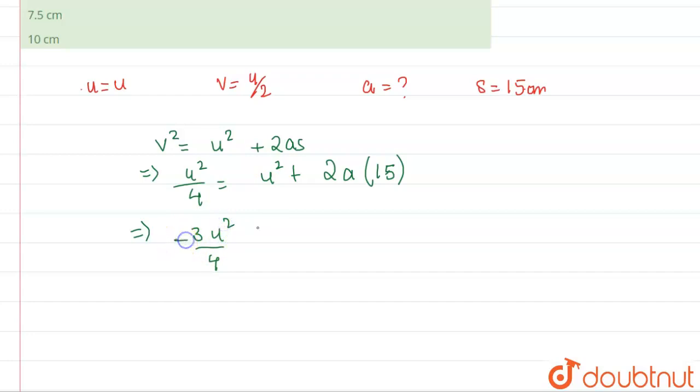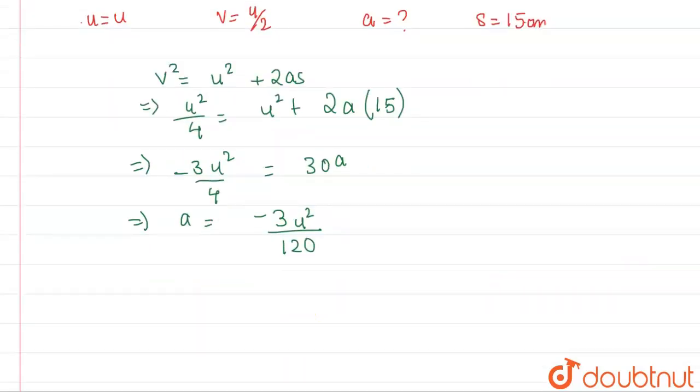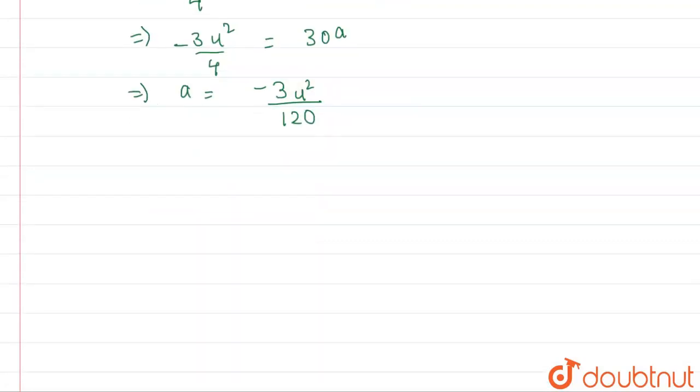This will be in negative, and this will be 30a. So acceleration will be found to be 3u² divided by 30 times 4. So this will be 4 times 3 is 12, so this will be 120. So this is the acceleration that we found, and we have to find out how much further the bullet will penetrate.